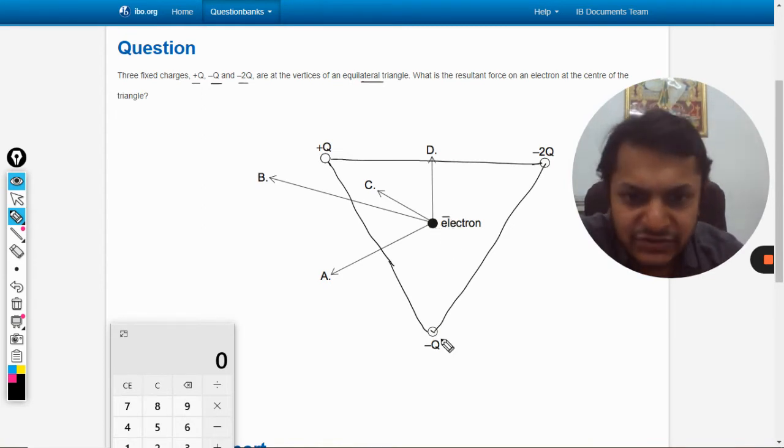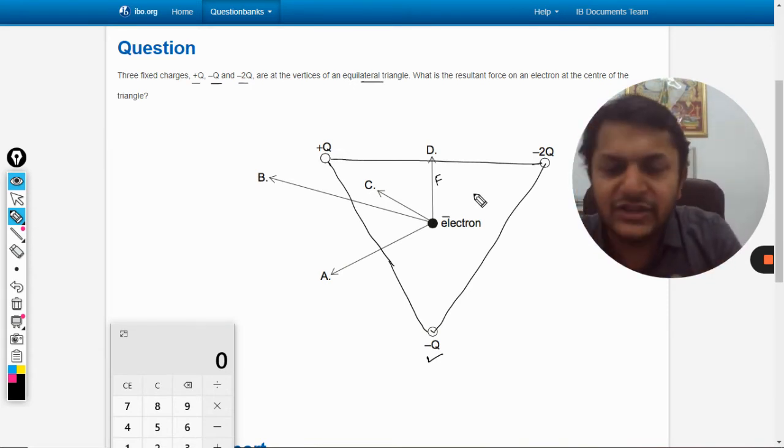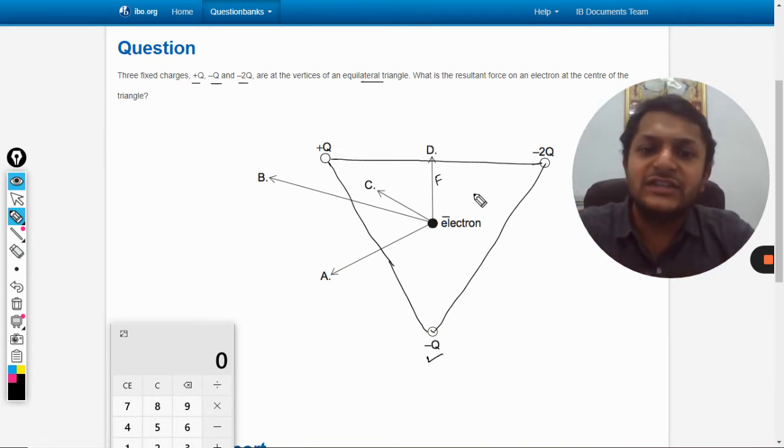Negative and negative would be giving a force here—a repulsion force. So definitely this force in the direction of D is the force which is the repulsion on the electron because of -q.